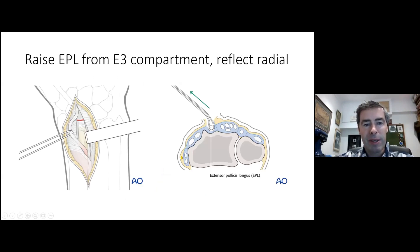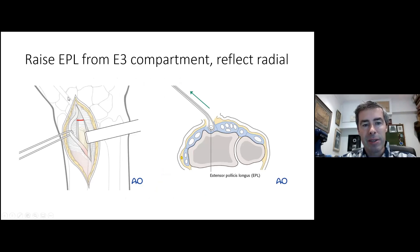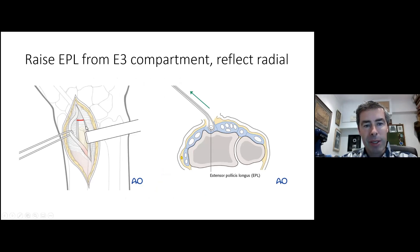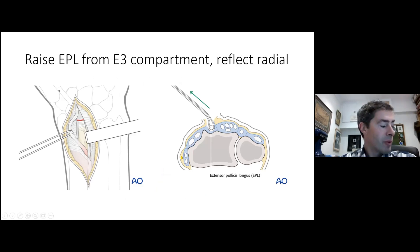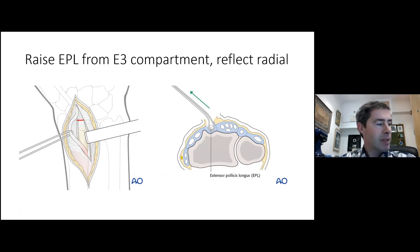Having raised the skin flaps, identify where EPL is — sometimes more distal, sometimes exactly at Lister's tubercle, sometimes more proximal; sometimes it's obvious, sometimes the fascia is thicker. Find EPL, release it all the way distally, avoiding the superficial radial nerve branches which come over the roof of your incision. Then release it through the third compartment and retract the EPL tendon to the radial side.